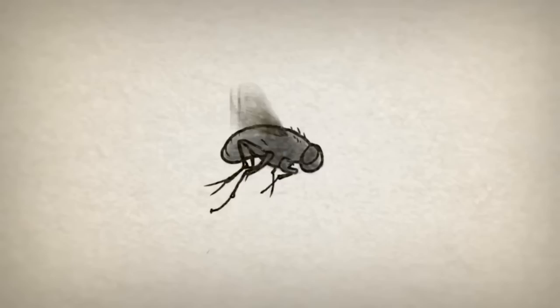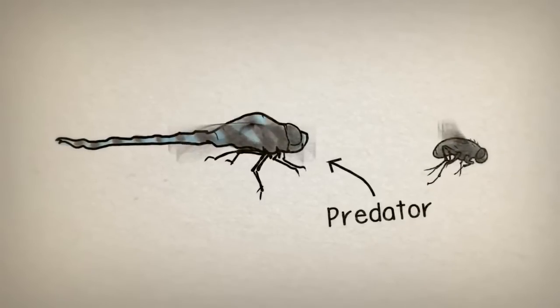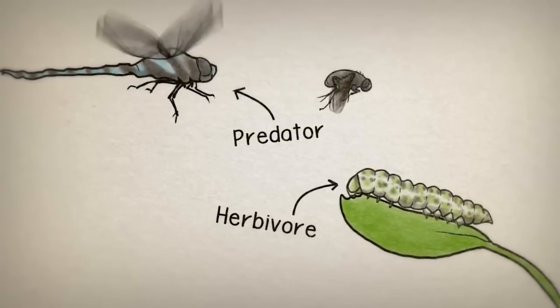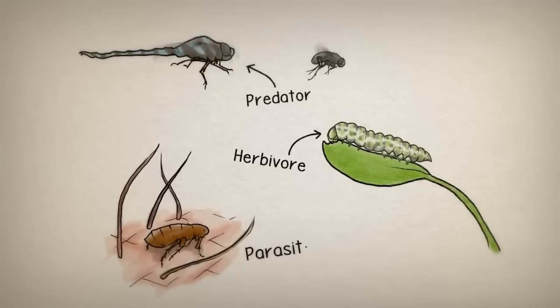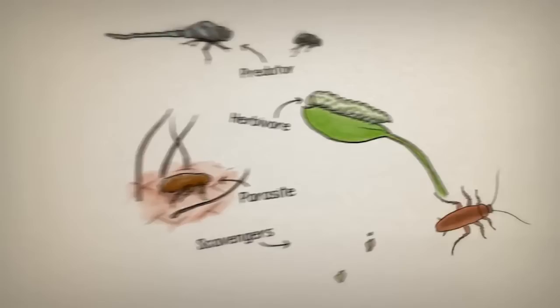Some insects are predators that hunt other animals. Others are herbivores that eat plants. And some live as parasites on or inside other animals. Others are scavengers and eat whatever they find in their environment.